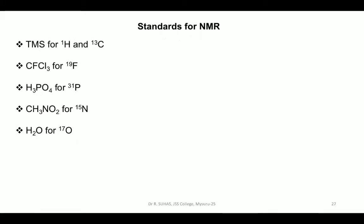Different kinds of spectroscopy require different reference standards. For proton NMR or carbon-13 NMR, use tetramethylsilane. For fluorine-19 NMR, use CFCl₃ (trichlorofluoromethane). For phosphorus-31 NMR, use orthophosphoric acid. For nitrogen-15 NMR, use nitromethane. For oxygen-17 NMR, use water as the standard.